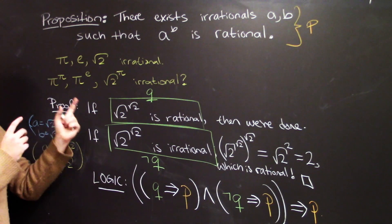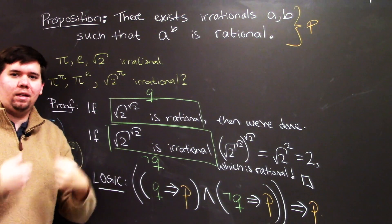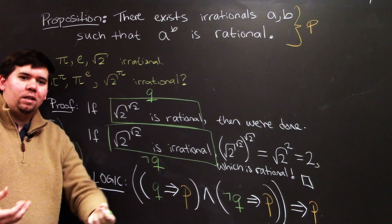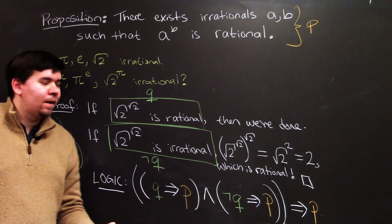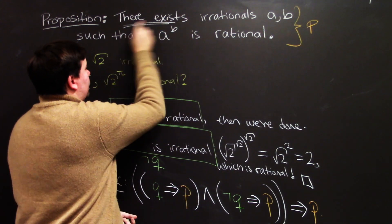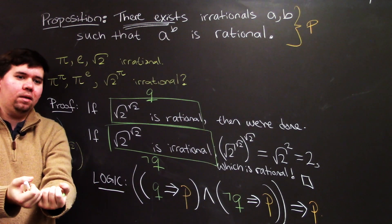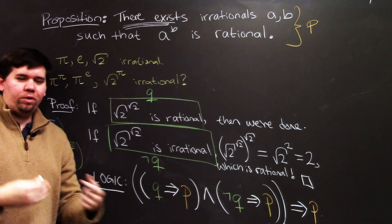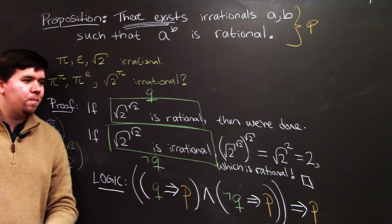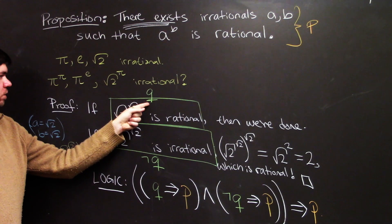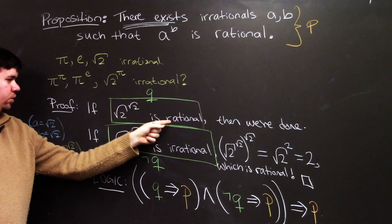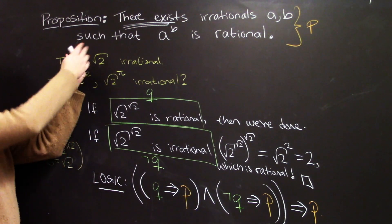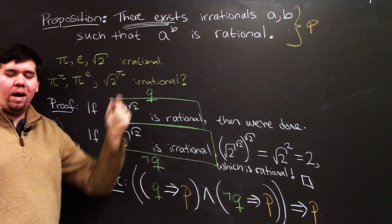This is a remarkable theorem. Typically we prove existence claims by simply providing an example — like proving there's an even prime by pointing to 2. But here we proved the existence claim not by giving a concrete example, but by showing that no matter what — whether Q is true or not — P must hold. And yet we don't actually have a verified example. I'll leave you to think about whether Q is actually true: is √2^√2 rational or irrational? But independent of figuring that out, we've proved there exist two irrationals such that one to the power of the other is rational. And that's pretty cool.